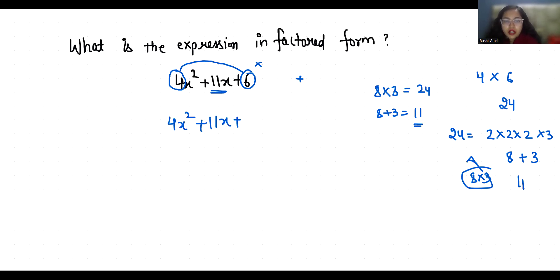This 11x I can write it as 8x plus 3x plus 6. Now from first 2 terms I can take 4x as common so x plus 2, and now from next 2 terms I can take 3 as common so x plus 2. Now x plus 2 is common so 4x plus 3. These are the factor form of this.